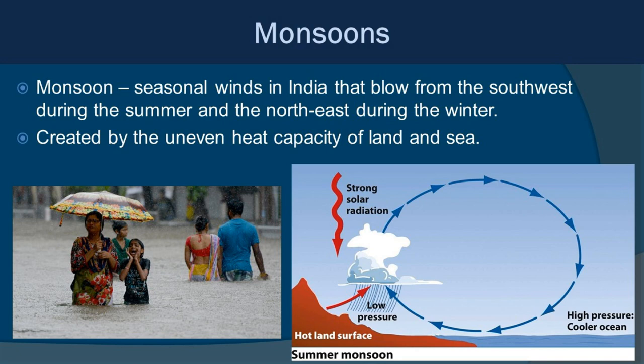El Niño is not the only fluctuation we have. A much more predictable and annual fluctuation are the monsoons in the Indian Ocean. Monsoons are seasonal winds in India that blow from the southwest during the summer and the northeast during the winter, created by the uneven heat capacity of land and sea. During the summer months, the land becomes much warmer, setting up high pressure over the cooler ocean and low pressure over the warmer land, so air moves from high to low pressure, creating onshore winds that bring ocean moisture to the land.